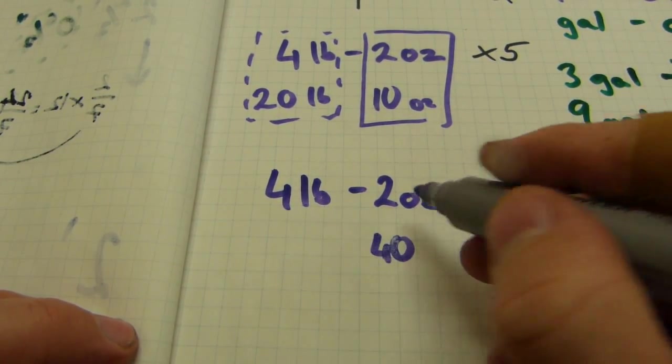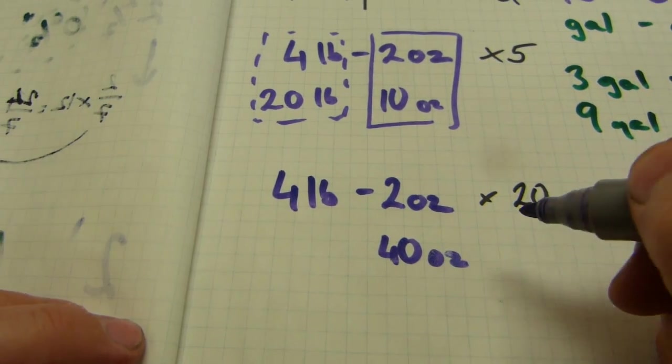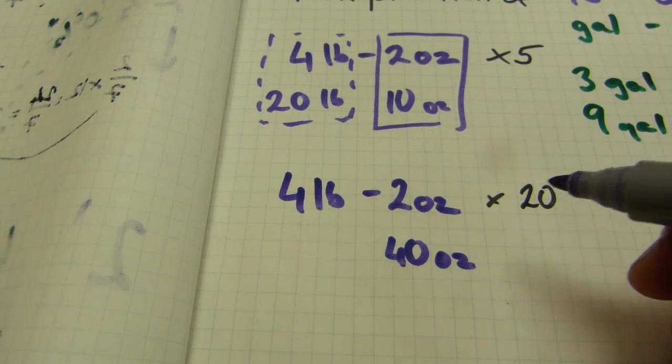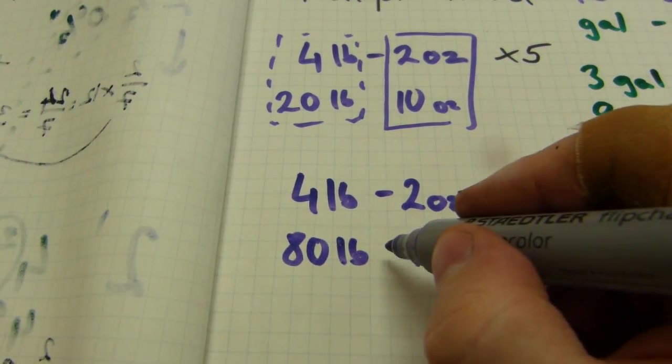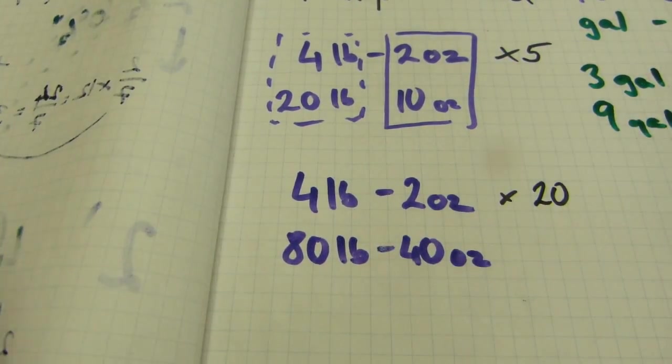And you just write it down in the ounces column. And two by four is eight, plus the zero is eighty pounds. So you write it in the pounds column. And just keep them separate.